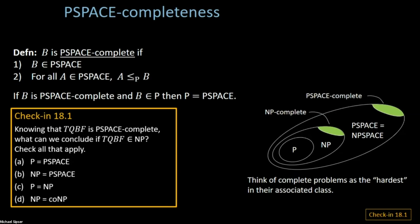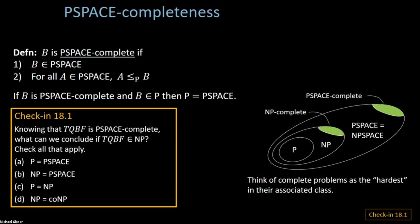Someone asks: shouldn't the reduction be weaker than the class? Yes — as far as we know, polynomial-time reductions are weaker than PSPACE. If P equals PSPACE, then every problem in P would be PSPACE-complete, which would be a strange world. We also believe there are even weaker reductions, like log-space reductions, which we'll look at in Thursday's lecture when we study complexity classes within P.